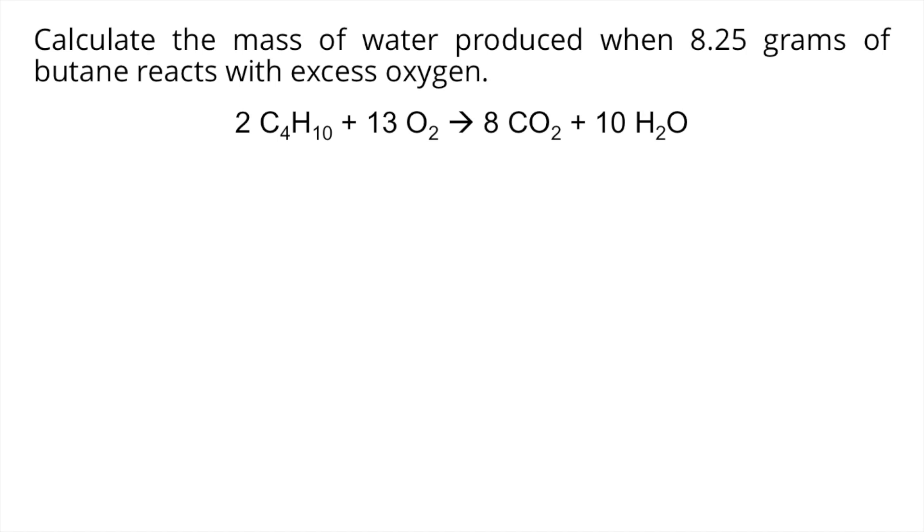The first thing you're going to do is start with the given, 8.25 grams of butane. So 8.25 grams of C4H10. The first thing you're going to do is convert grams of C4H10 into moles of C4H10.